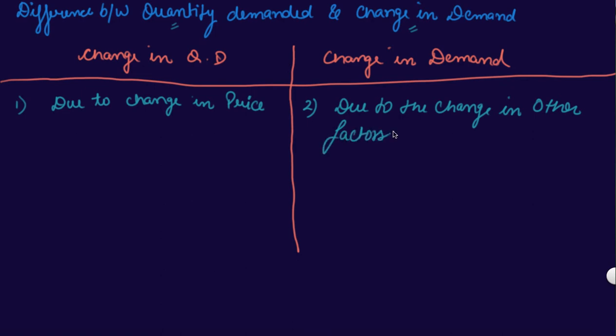The second difference we have, change in the quantity demanded, is movement along the demand curve. This is your demand curve. So there was movement along the demand curve, right? Demand curve did not shift it to right or left. So this is your movement along the demand curve.